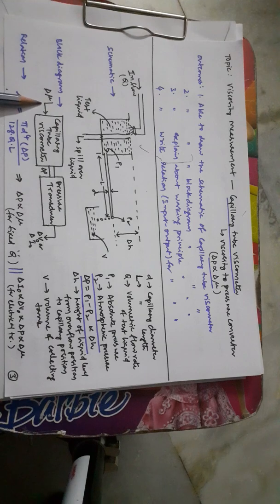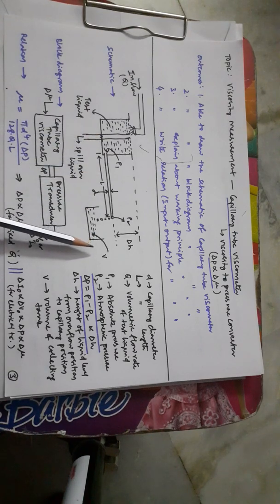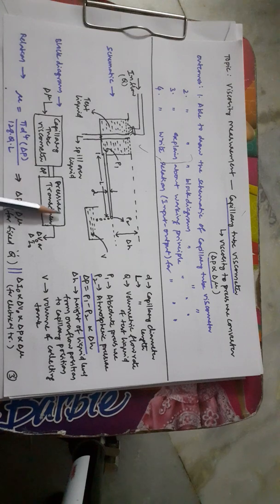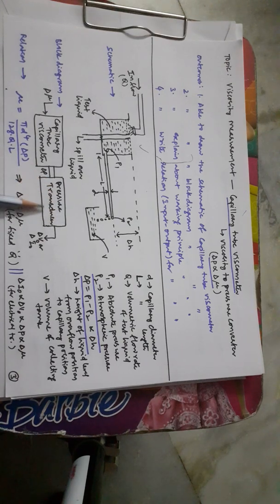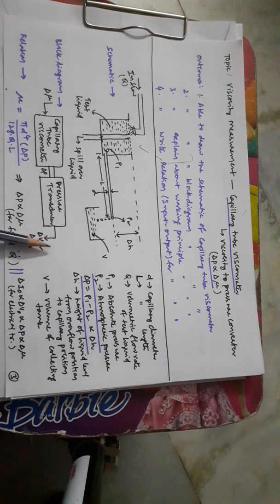The capillary tube acts as a mechanical transducer — input is delta mu and output is delta P. To obtain an electrical output, this mechanical setup is connected to an electrical transducer. In the block diagram, the capillary tube viscometer is the primary transducer with delta mu as input and delta P as output. A second pressure transducer measures the differential pressure and produces an output voltage, which can then be converted to current using a V-to-I converter in the required range.